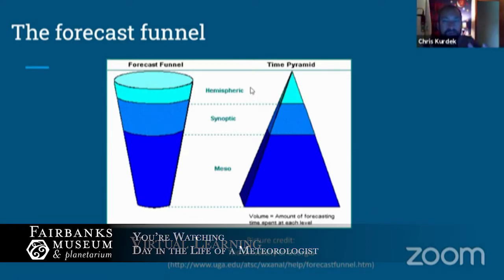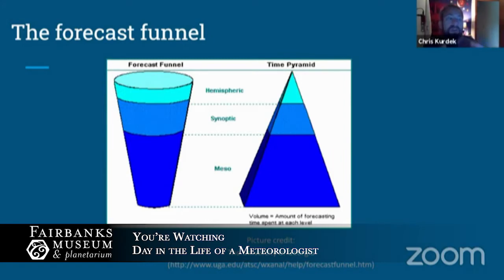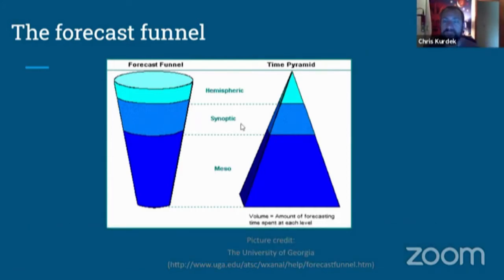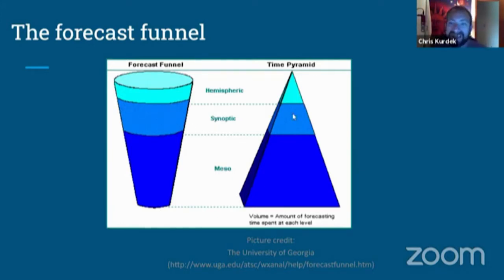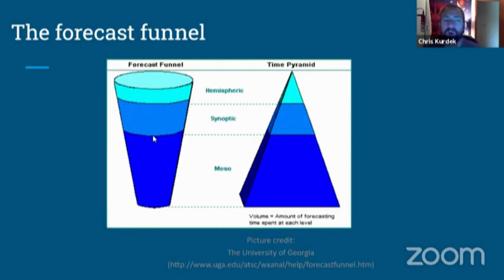The hemispheric or planetary scale covers one half of the earth or the planet as a whole. Synoptic scale covers your bigger storms — like the storm over northern New England today, nor'easters, or hurricanes — those bigger low and high pressure systems. In the forecast funnel, you spend more time on synoptic scale. Then there's the mesoscale — smaller features like tornadoes, thunderstorms, or showery activity — where you spend the most time.